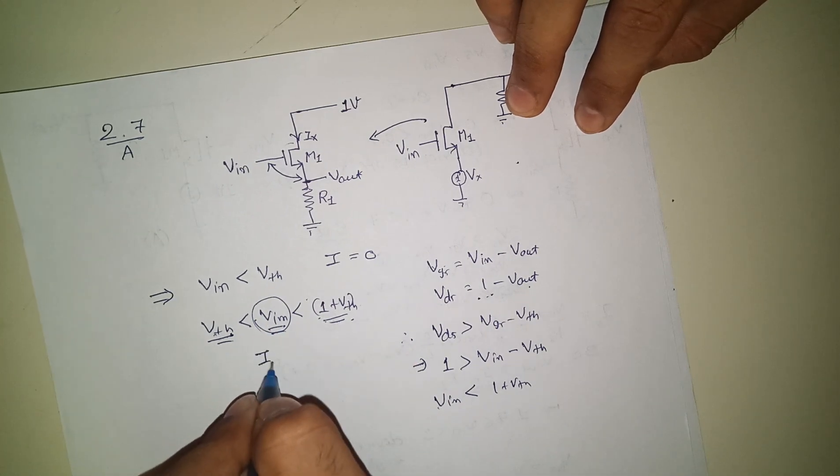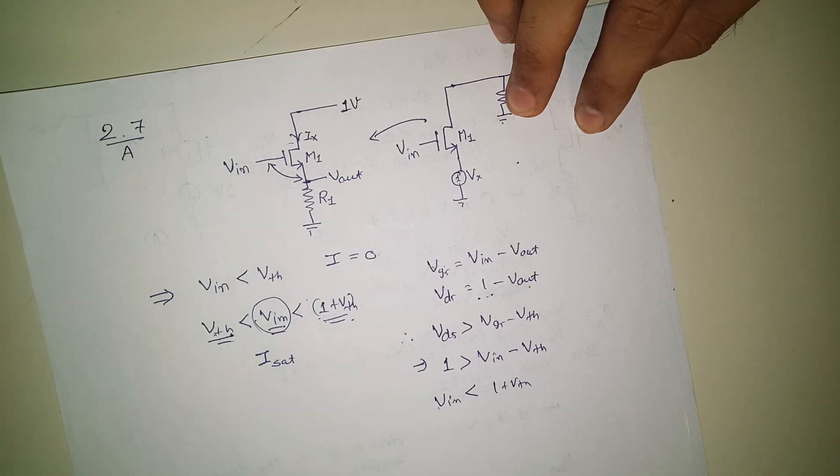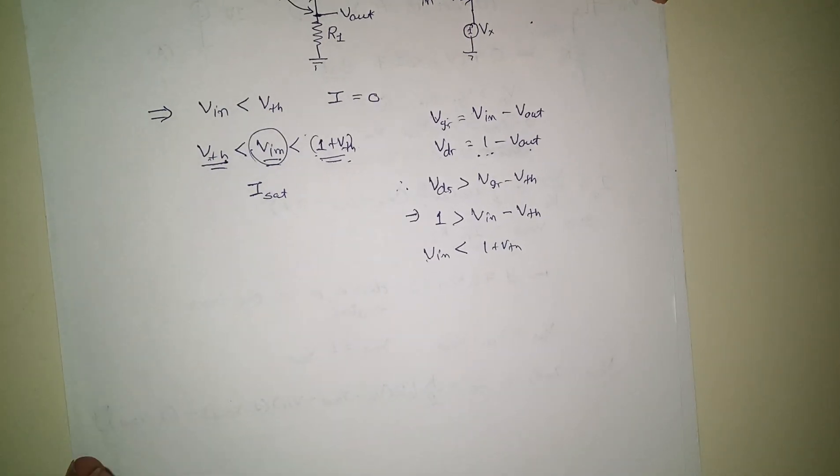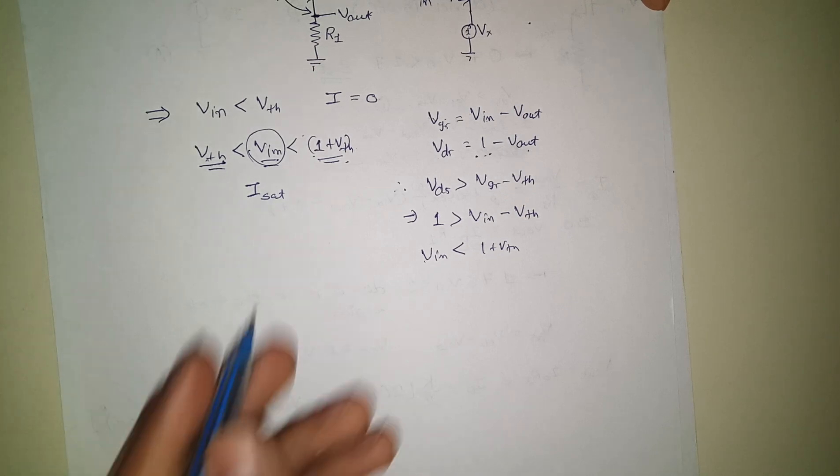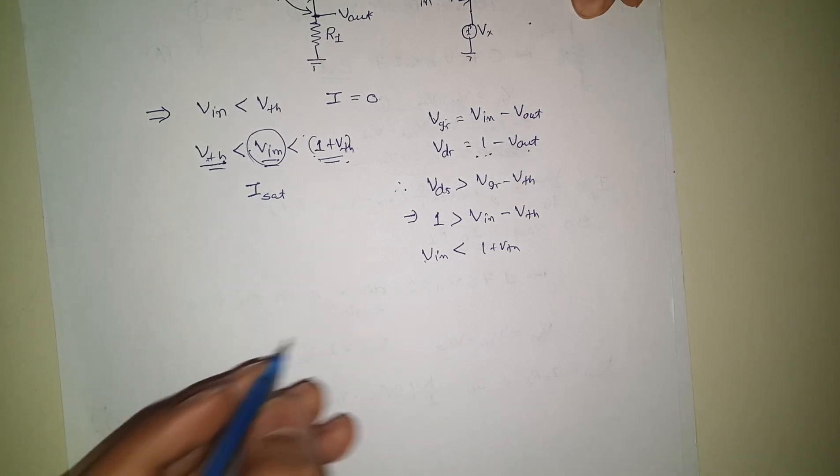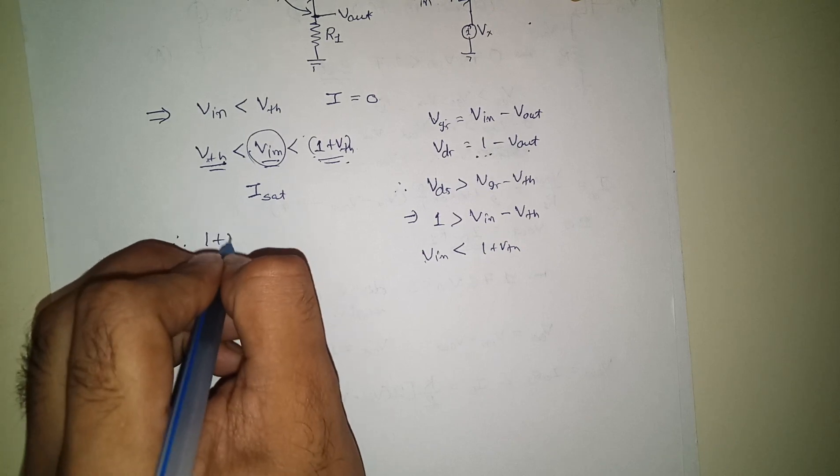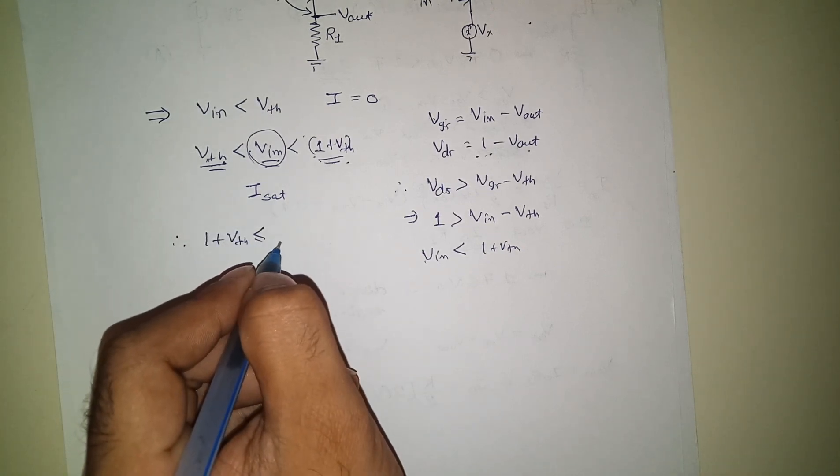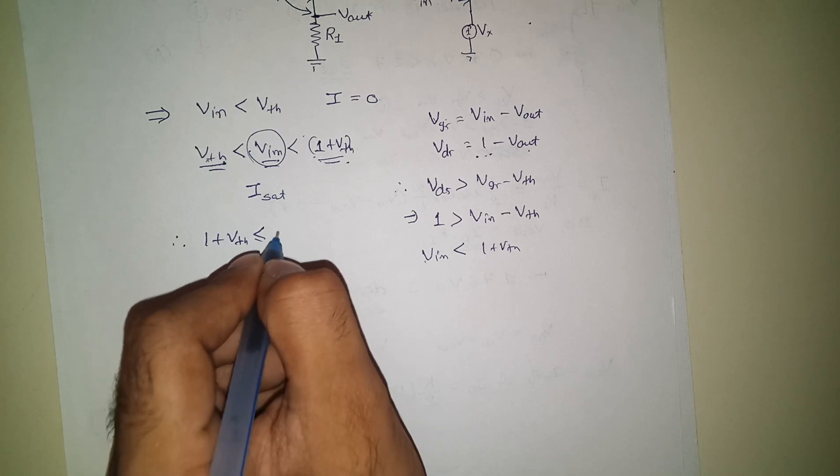You can find that equation by just putting the equation of I_saturation, and from 1 plus V_th, that is greater than or equal to V_in to 3 volts. That is V_DD.